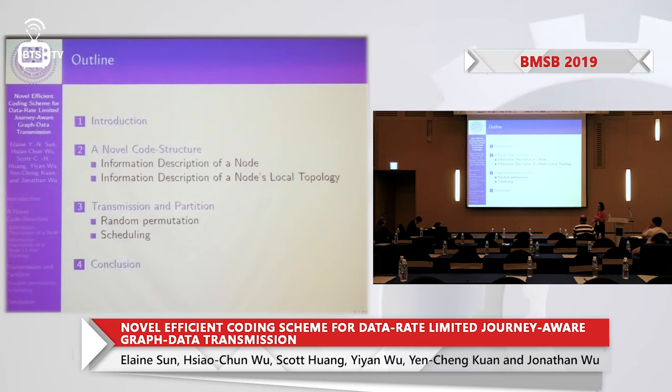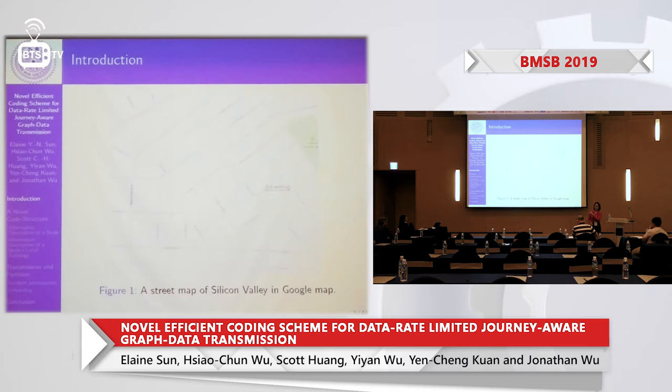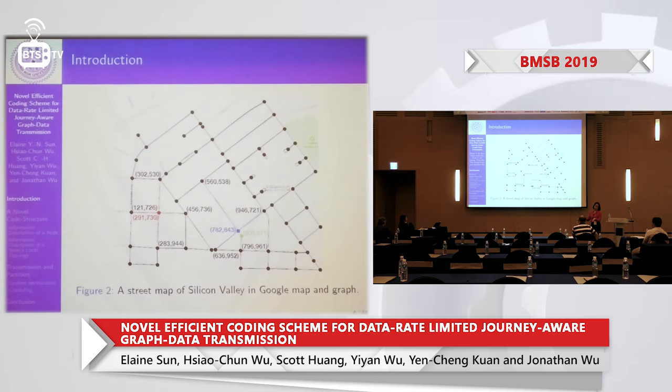Before I present my paper, I want everyone to think about a question. I believe everyone is familiar with a Google Map. If you are a driver, it is really necessary to have this kind of map. However, you only need to highlight the important information for you. If you want to drive from A to B, you only need to know the path — you don't need all the extra details. So how can we transmit a graph?